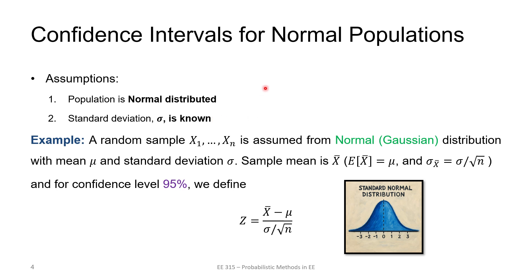For confidence intervals, we have two main assumptions: the population is normally distributed, and in the beginning we start with a known standard deviation sigma (variance sigma squared). For example, random samples x1 through xn are assumed to be normally distributed with mean mu and standard deviation sigma. The sample mean x-bar has expected value equal to mu — making it an unbiased estimator — and standard deviation equal to sigma divided by the square root of n, meaning more samples brings us closer to the true standard deviation.